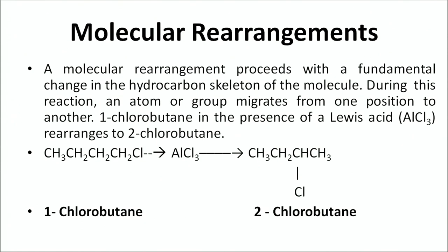Next is molecular rearrangement. Molecular rearrangement proceeds with a fundamental change in the hydrocarbon skeleton of the molecule. During the reaction, an atom or group migrates from one position to another. For example, 1-chlorobutane on reaction with aluminium chloride, which acts as a Lewis acid, forms 2-chlorobutane — there is only a rearrangement of atoms within the molecule. Such reactions are called molecular rearrangements.